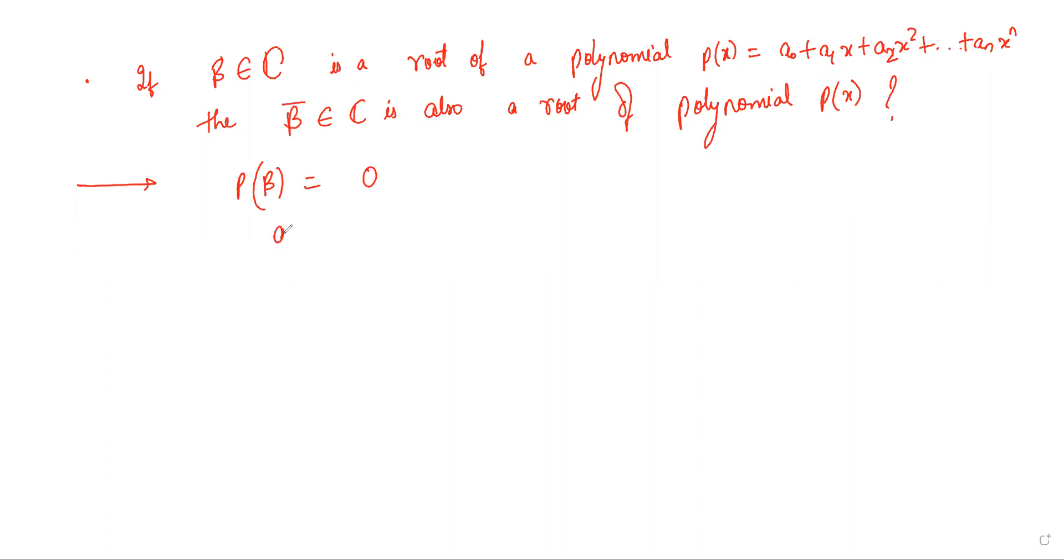What does that mean? a_0 plus a_1 beta plus a_2 beta squared plus dot dot dot a_n beta raised to n equals 0.